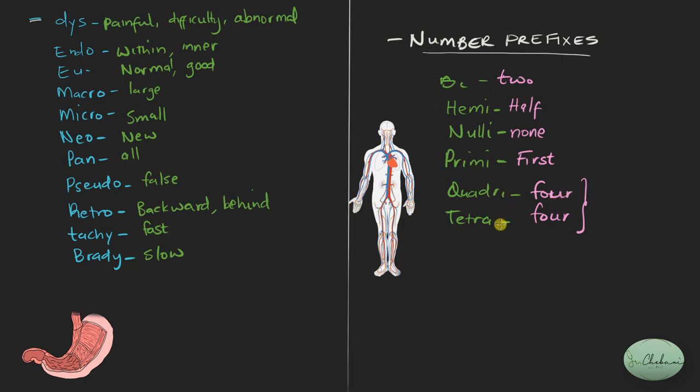And I want you to do a bit of homework here. Find out the difference between the two. Find out the difference between quadri and tetra in terms of word of origin. Like which one is Greek? Which one is Latin? And in what context are they used? So just find that out for yourself.